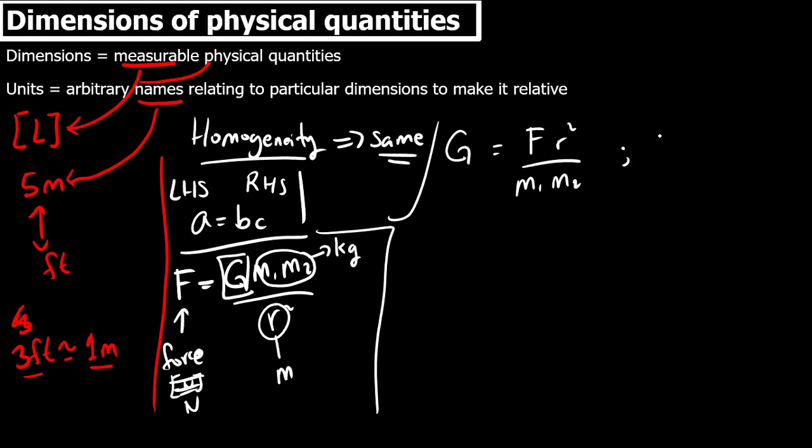And then we remind ourselves that F equals to ma. In SI unit, that is these are all in SI units, F equals to ma, so therefore the unit will be kg m s^-2.